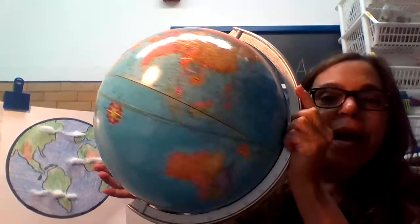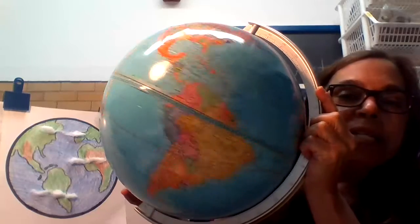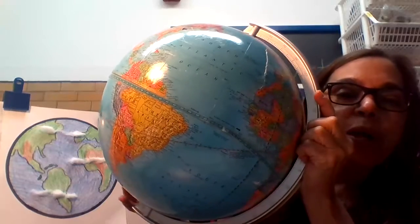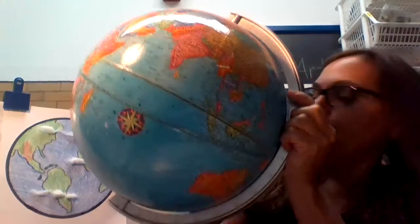This is a globe. This is the Earth. This is what it looks like. The Earth spins around up in the sky, and the blue part is the water.